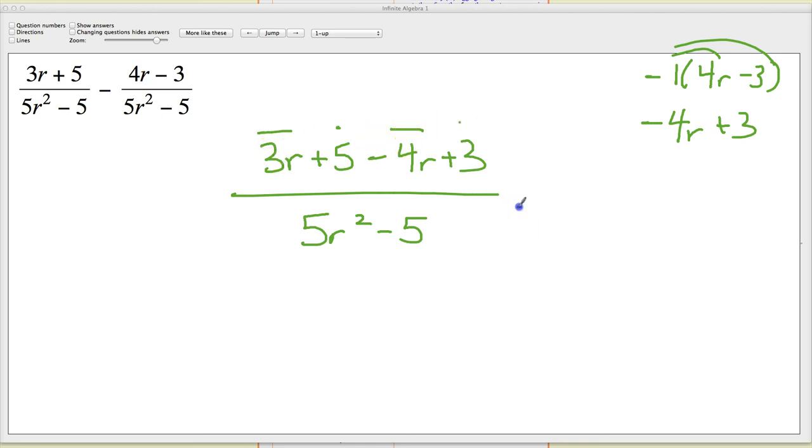So anyway, I might make some marks on here to help me identify like terms. 3 minus 4 is negative 1r, and then 5 plus 3 is 8. Remember, only combine based on the signs that are in front. This 3 doesn't know this negative is here, so don't try to pretend like it does. And then 5r squared minus 5.